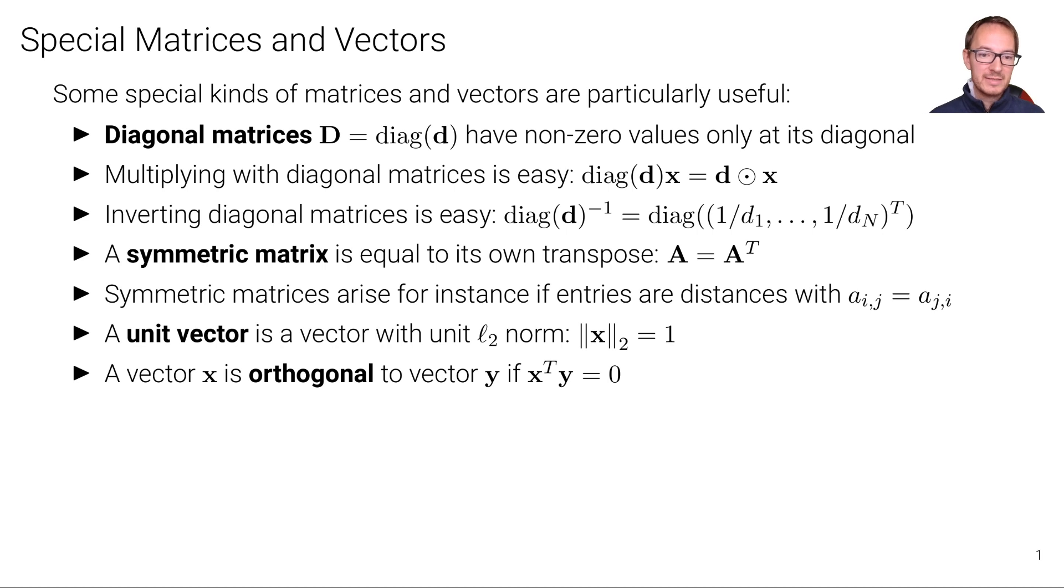A vector x is said to be orthogonal to a vector y if the inner product between x and y equals zero.